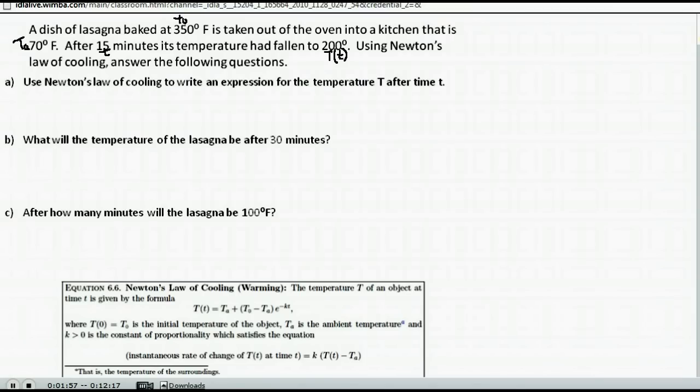Part A: use Newton's law of cooling to write an expression for the temperature T after time t. Well, before we can do that, we need to know what our K is, or our rate of cooling. So in order to find that, we're going to put all of the values that we know into our formula and go from there.